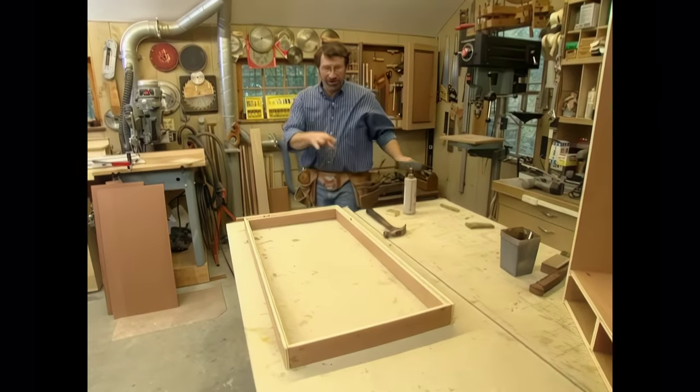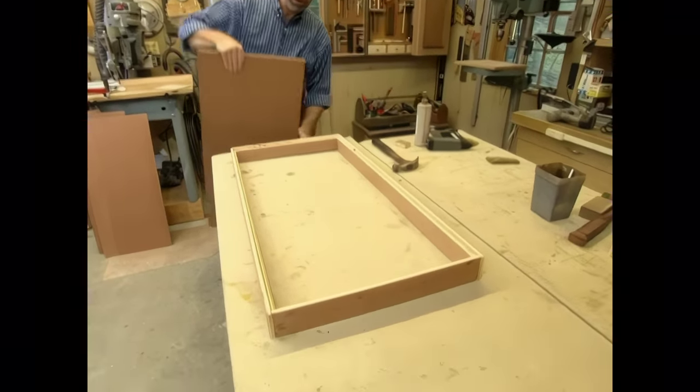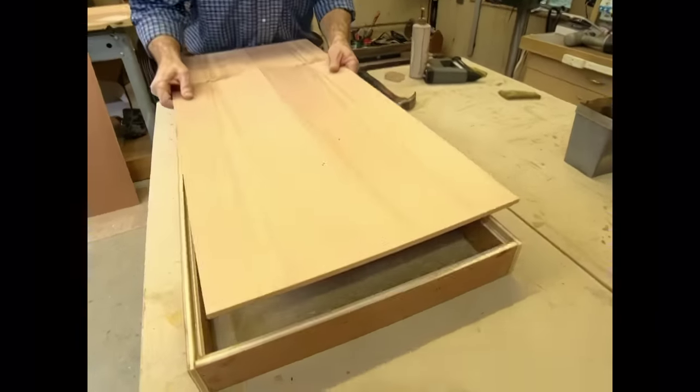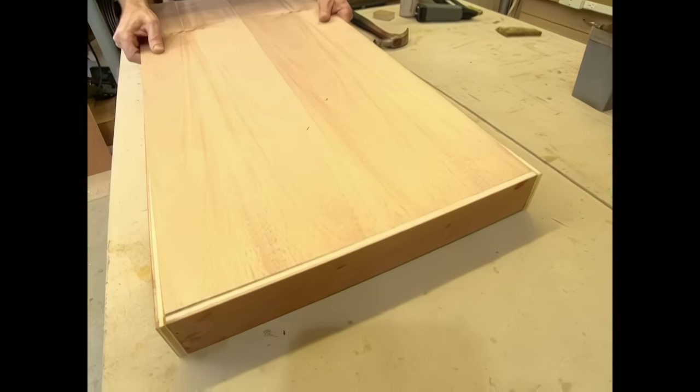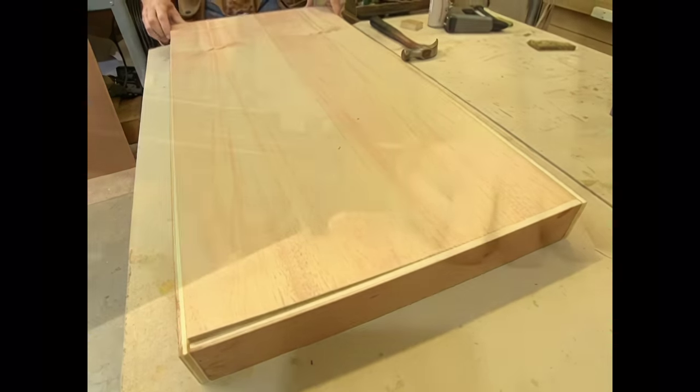Well this may seem like overkill. All these dados and rabbets and glue and nails but this piece is going to be heavy. We don't want it to go anywhere. Well here's the first door box. I've nailed the corners together, applied a bead of glue in that rabbet and now I can set the panel and fasten that with some brads.